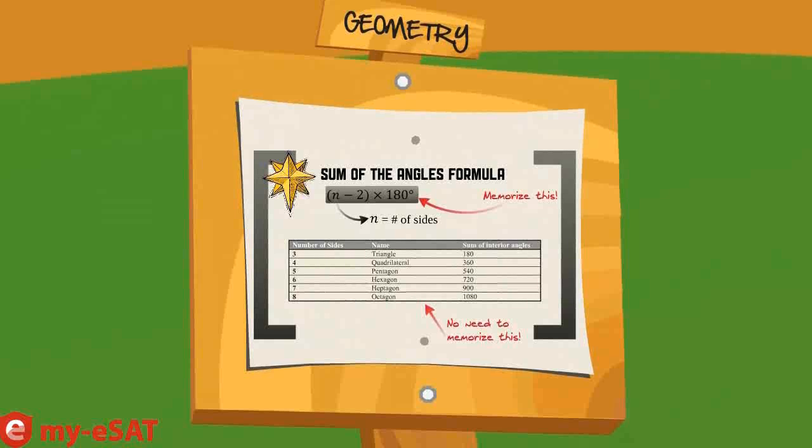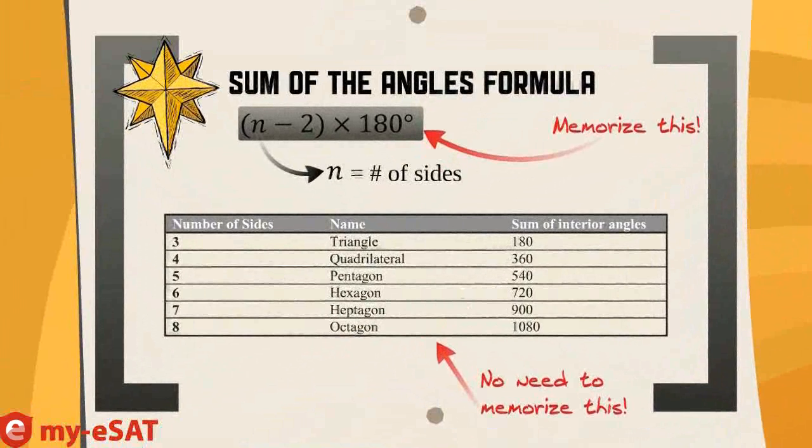The sum of the interior angles of a polygon with n sides is n minus 2 times 180 degrees.